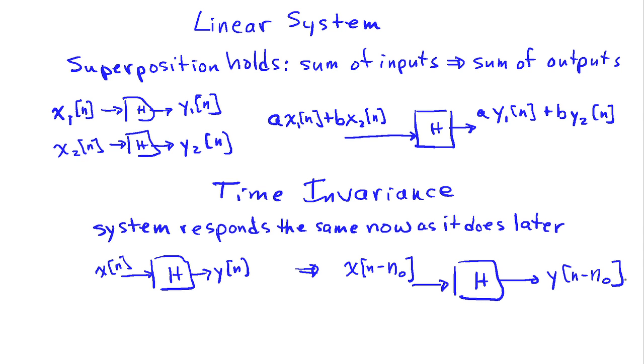Now a system that satisfies both of these properties is said to be linear and time invariant. Again, these properties are only approximate. I mean, this says that if I have some mp3 player now and then I wait to use it in 10 billion years, that it's going to work the same as it does now. And obviously that's not true. Things fail, things break, things don't last. So time invariance, again, is with respect to some limited time horizon that's of interest to us.